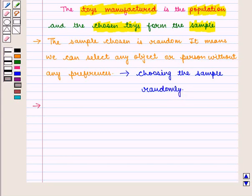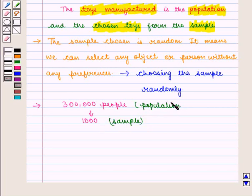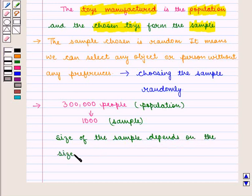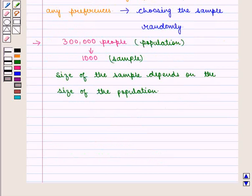Now in the above example we chose 1,000 persons from 300,000 people. It means size of the sample depends on the size of the population. It means if we are having 200 objects as population then we can choose sample of 15 objects.